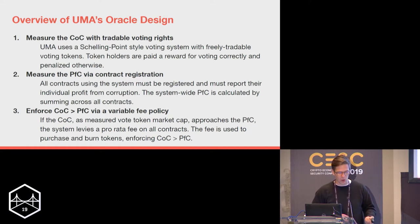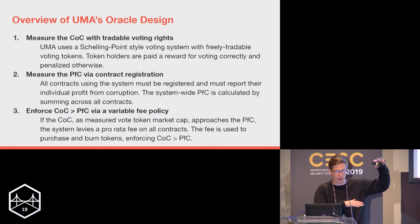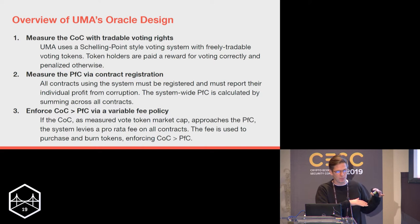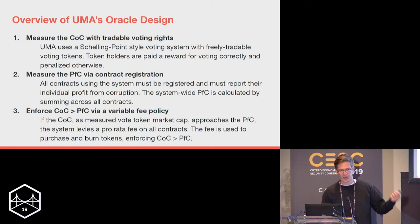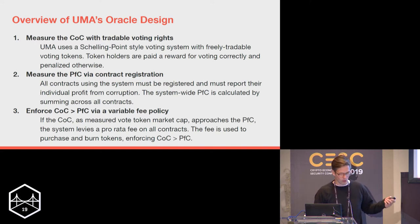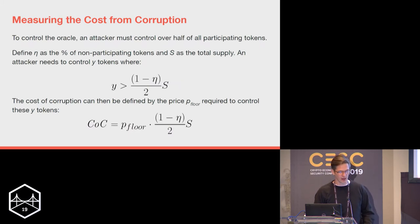Lastly, we maintain this inequality with what we're calling a variable fee policy. As the Cost of Corruption approaches the danger zone — as the inequality looks like it might break — the system levies a fee on all contracts using the system and uses that fee revenue to buy and burn the voting token to continuously reinforce the CoC > PfC inequality.